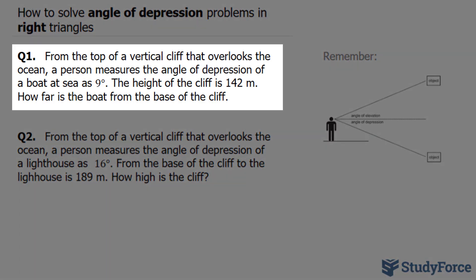Question 1 asks: From the top of a vertical cliff that overlooks the ocean, a person measures the angle of depression of a boat at sea as 9 degrees. The height of the cliff is 142 meters. How far is the boat from the base of the cliff?